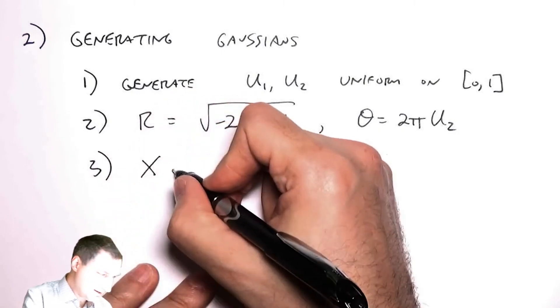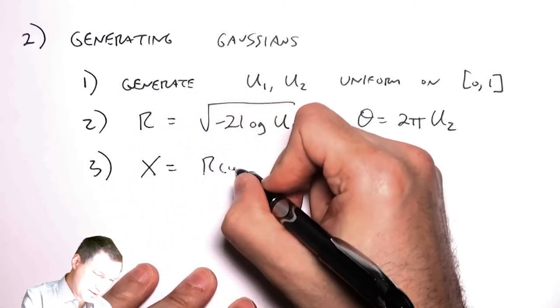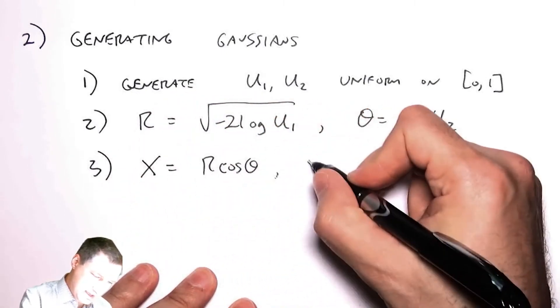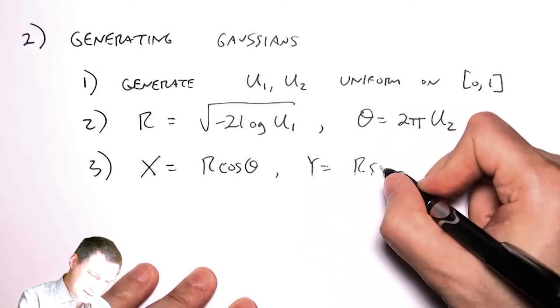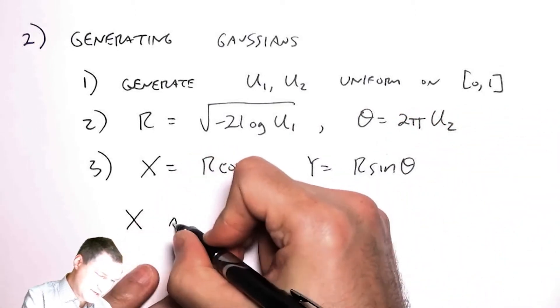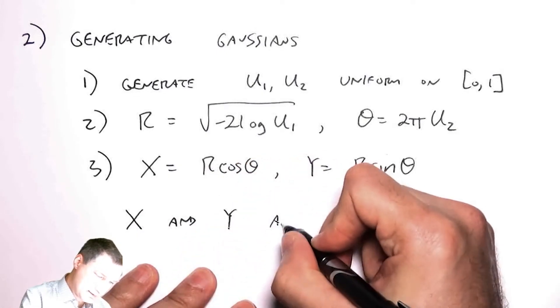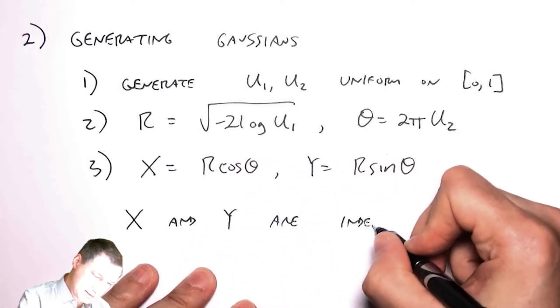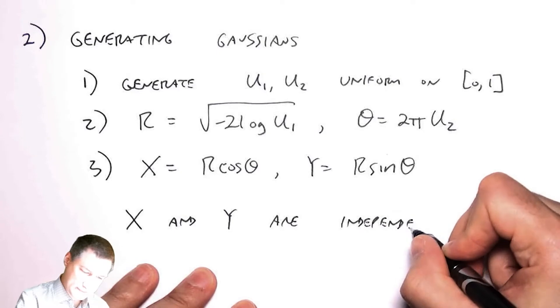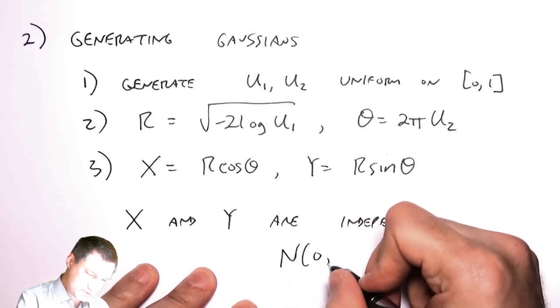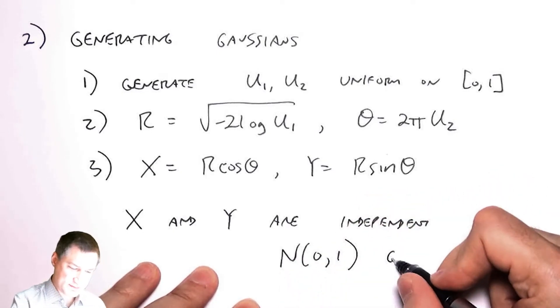And I generate x equals r cosine theta and y equals r sine theta. And it turns out that x and y are independent normal 01 Gaussian random variables.